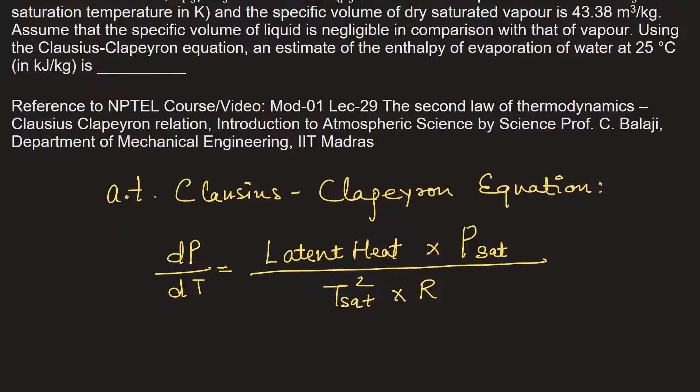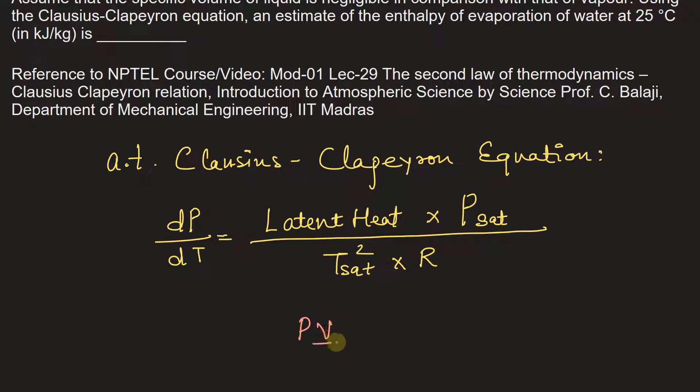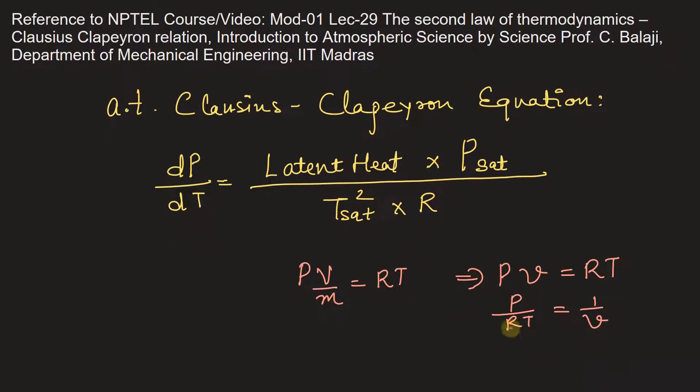Using ideal gas equation, P V by M is equal to RT. Let's write V by M as specific volume. So P V is equal to RT. From here, P by RT is equal to 1 upon V, the specific volume of saturated vapor. For saturation, we can write saturation. Using this...